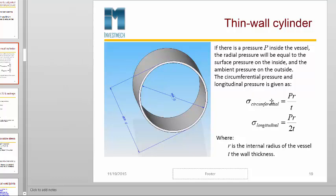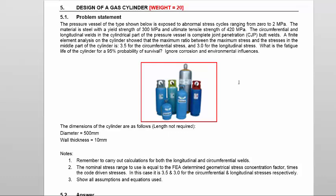Now that we can calculate the stress, we can do the fatigue calculation. We know they are complete joint penetration butt welds, so we take the tables from the Eurocode — EN1993 part 1-9 — and select the weld detail associated with a complete joint penetration butt weld. In this case, they are made from one side only, from the outside.